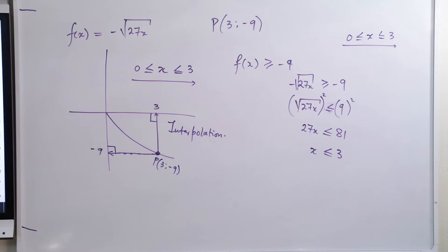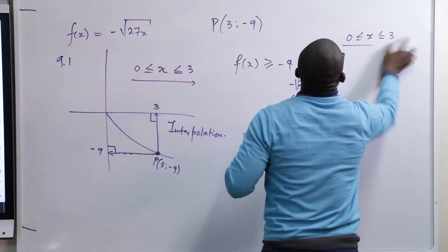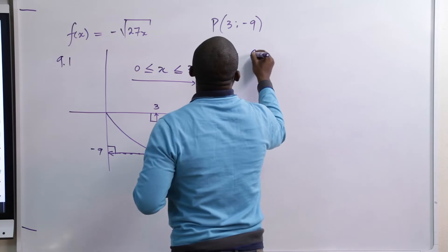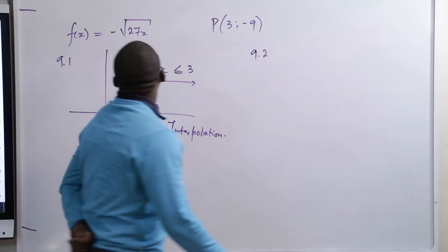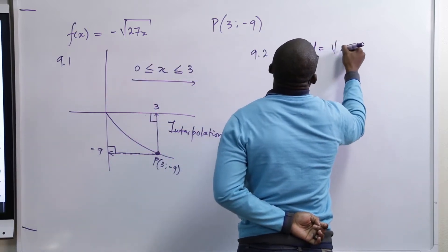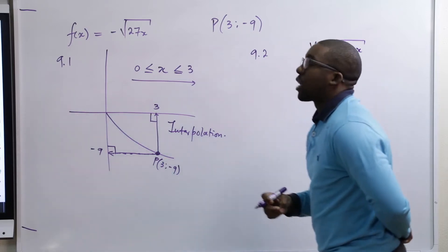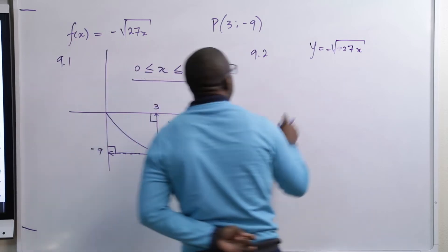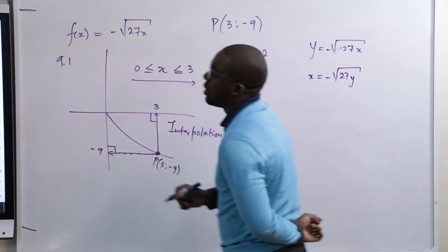That was question 9.1. Moving to question 9.2: write down the equation of F to the minus 1. F⁻¹ indicates we are dealing with an inverse. Y equals negative root of 27X. Step 1: interchange X and Y — wherever there is a Y put X, wherever there is an X put Y.